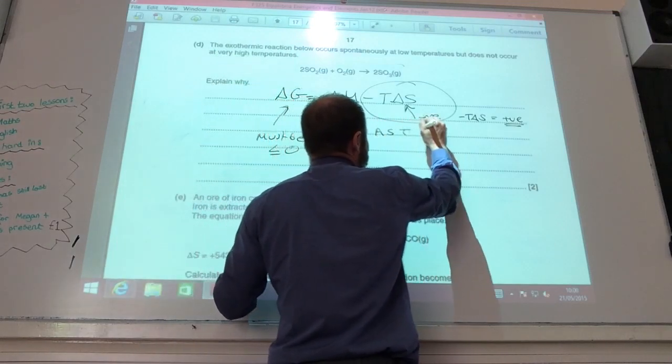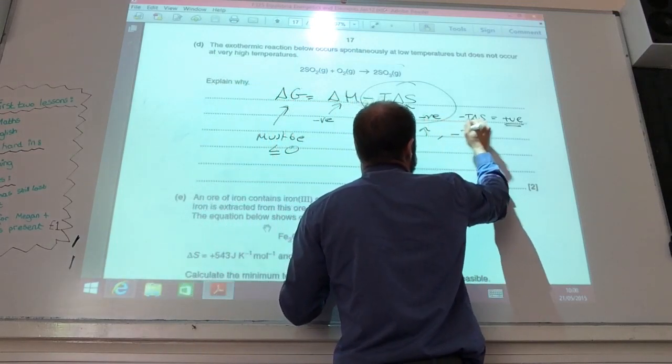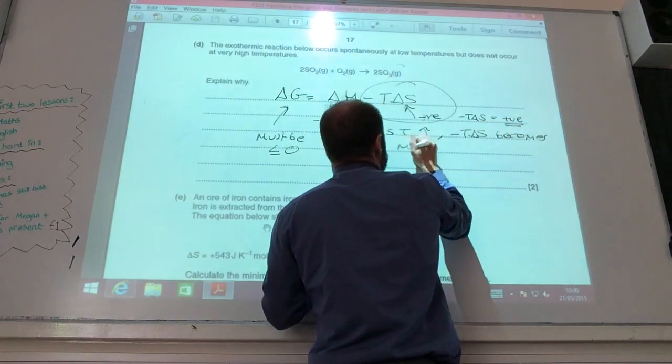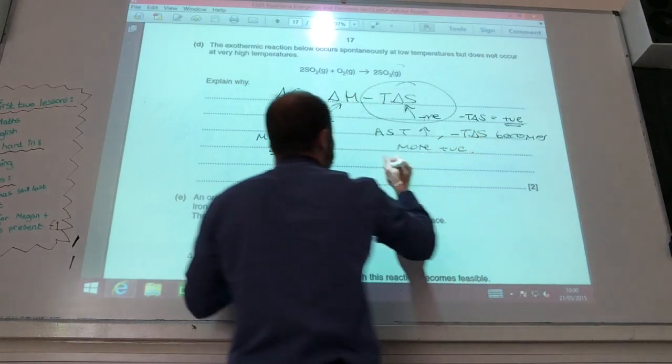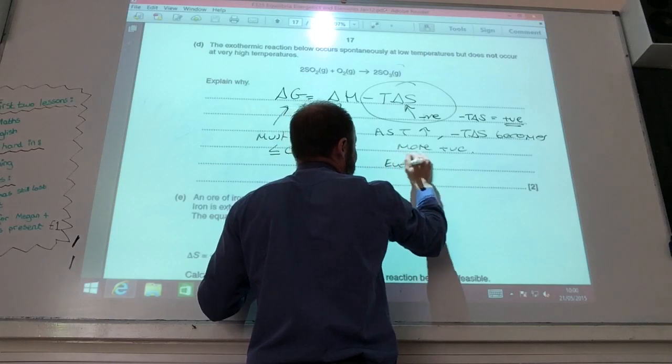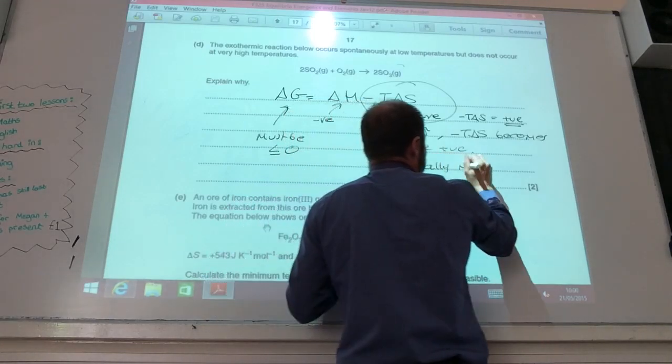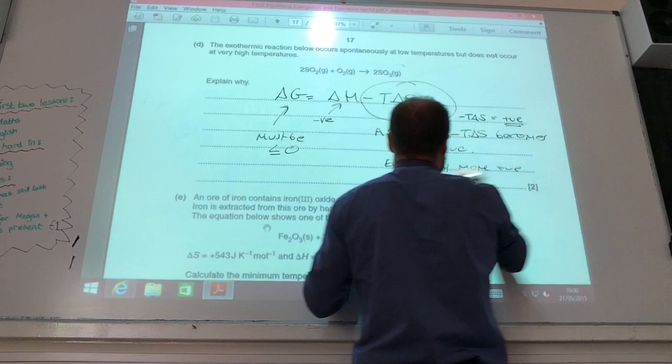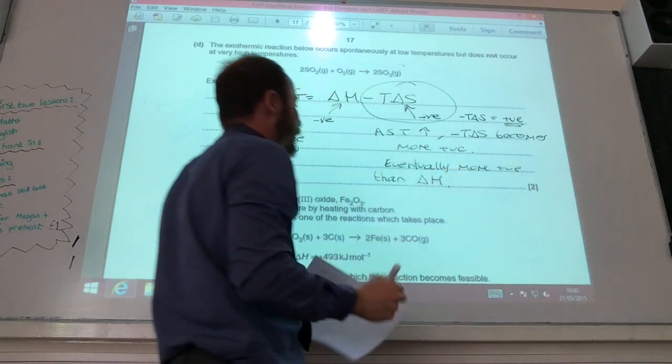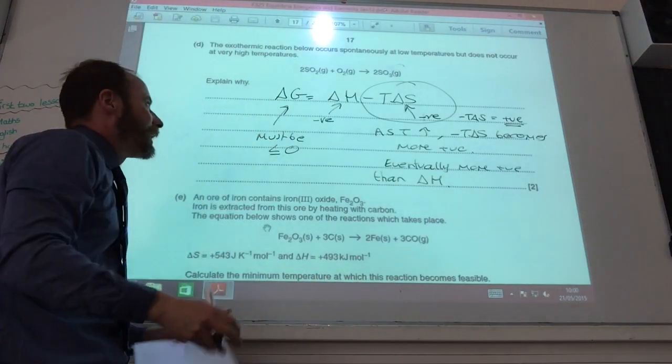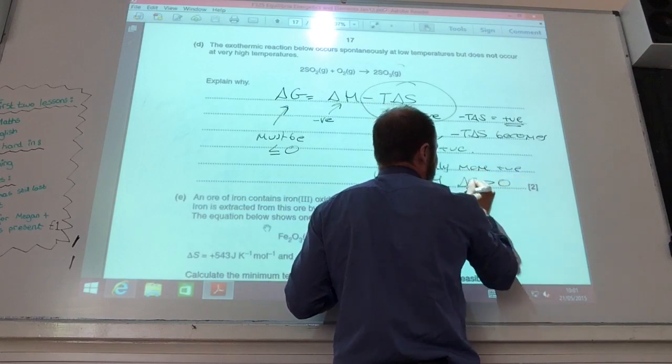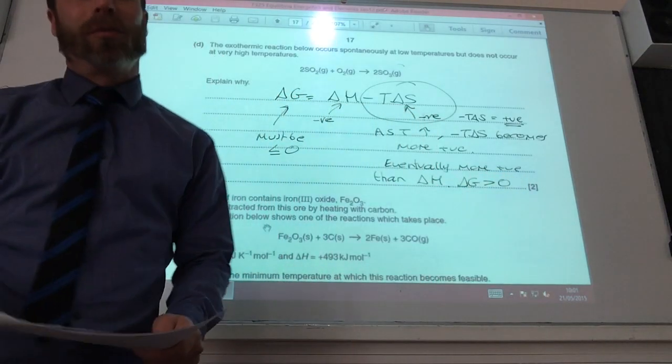So as T increases, minus T delta S becomes more positive, and then eventually it will become more positive than delta H is negative. And therefore delta G will become positive. Delta G becomes more than zero and it's therefore no longer feasible.